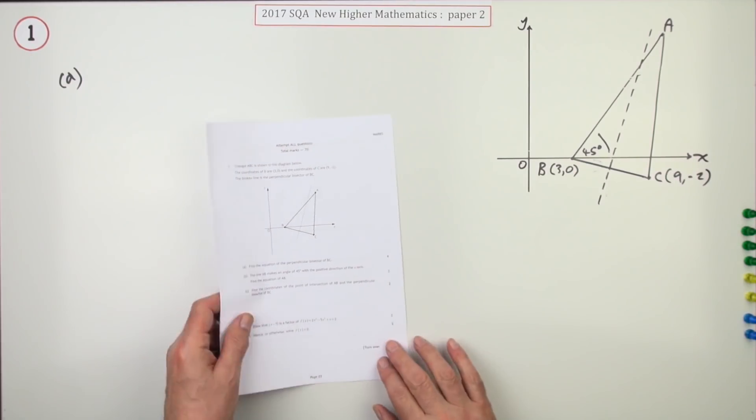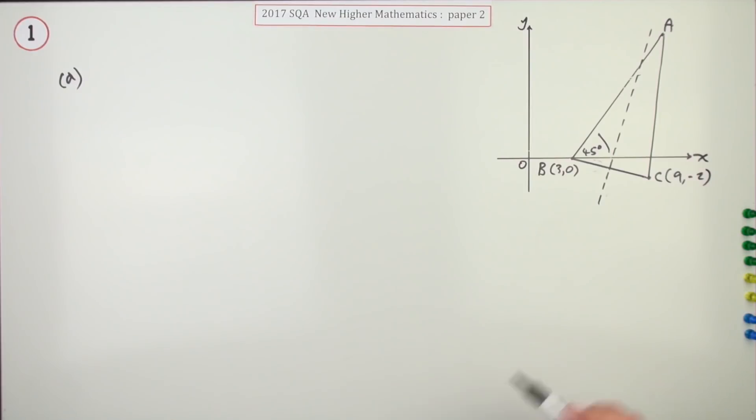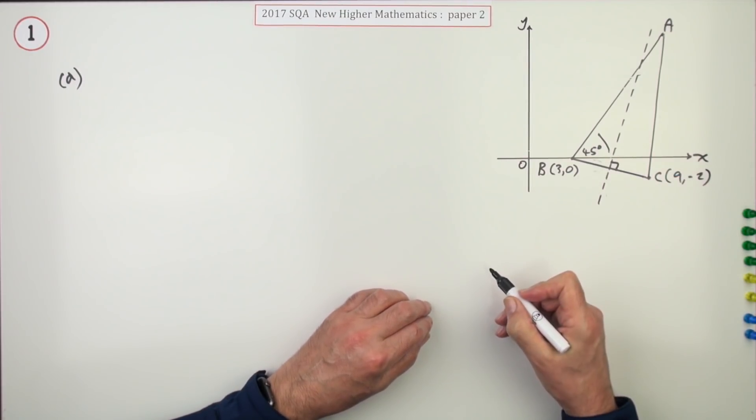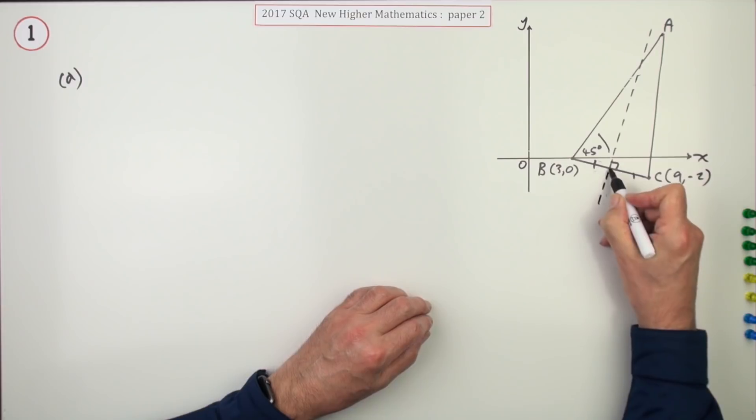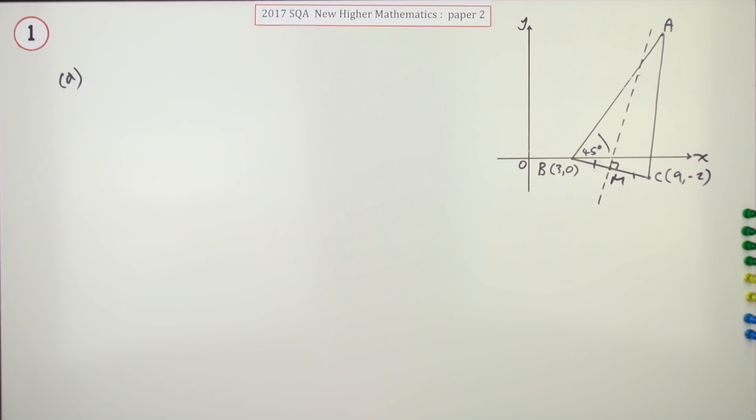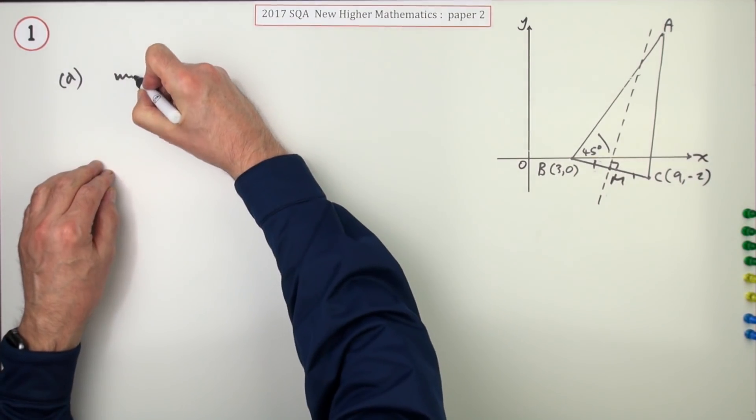Well, it's the perpendicular, so right angles, bisector means it goes through the middle. Maybe we'll just call that M. We'll just see what it is here though.